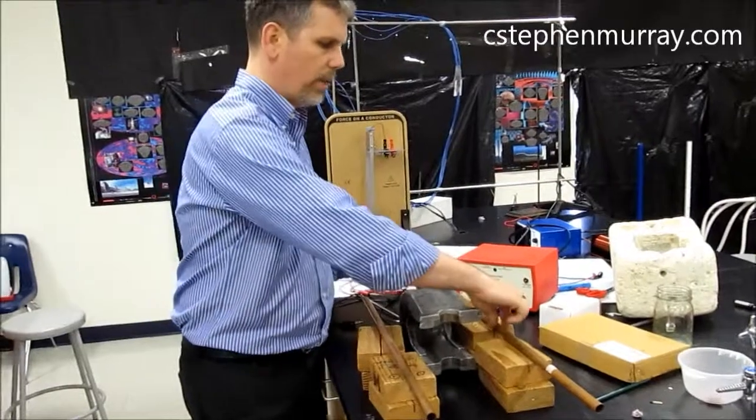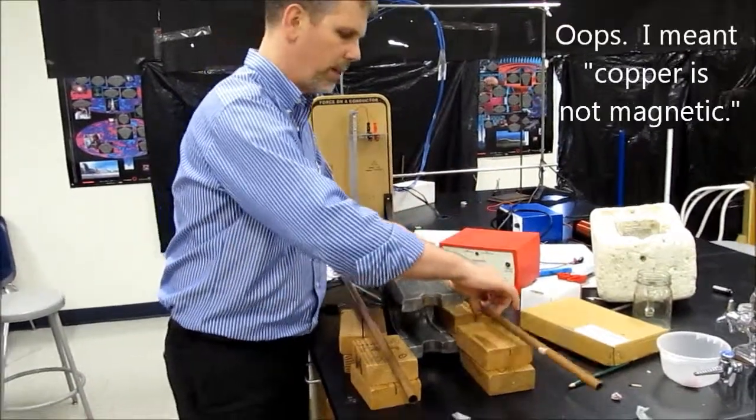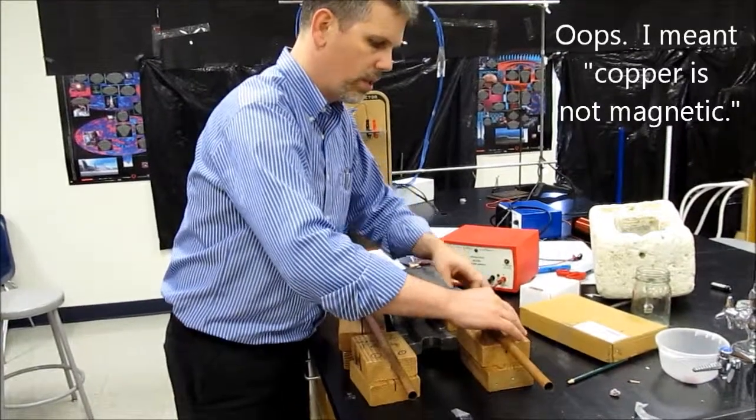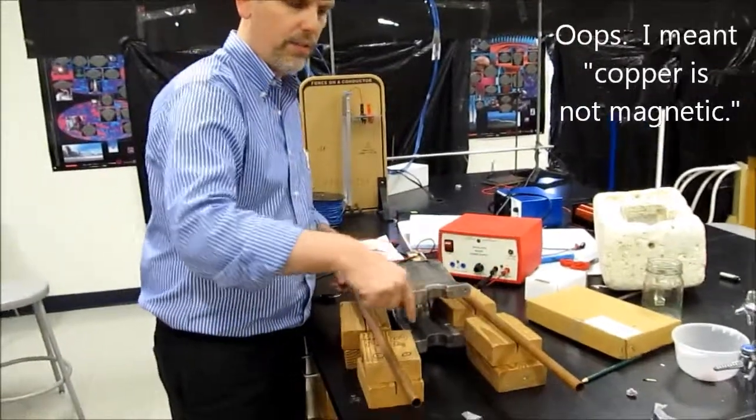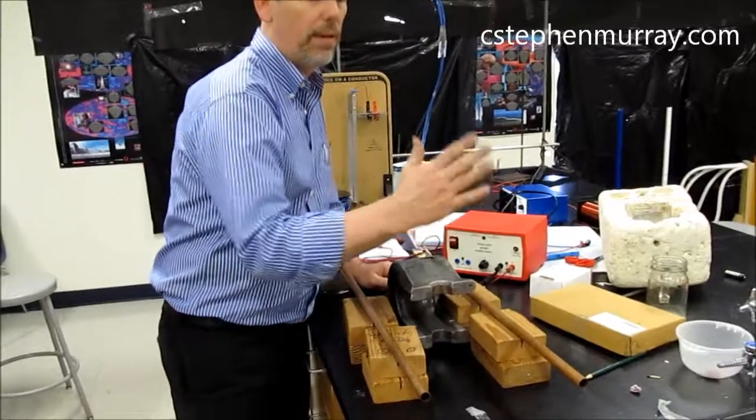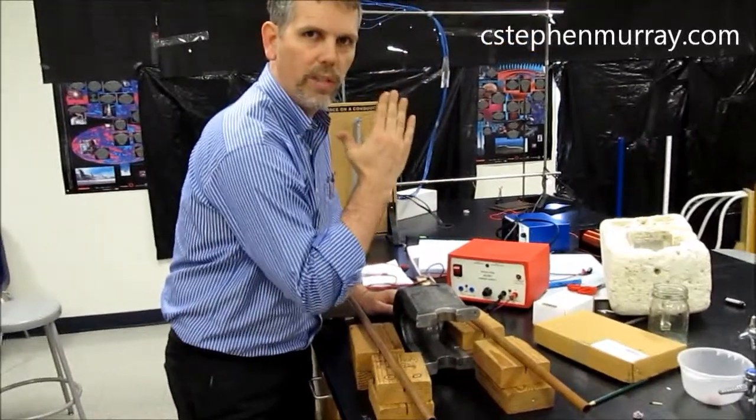Now we have copper tubes. There's the positive on this side, here's the negative over here on the other side. So the charge is going to go from positive to negative. The charge is going this direction, magnetic field from north to south, charge is going this way, so it should feel a force into the magnet.